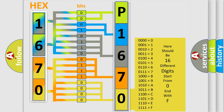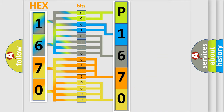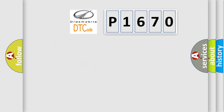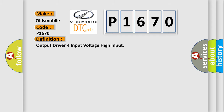We now know in what way the diagnostic tool translates received information into a more comprehensible format. The number itself does not make sense to us if we cannot assign information about what it actually expresses. So, what does the diagnostic trouble code P1670 interpret specifically for Oldsmobile car manufacturers? The basic definition is: Output Driver Four Input Voltage High Input.